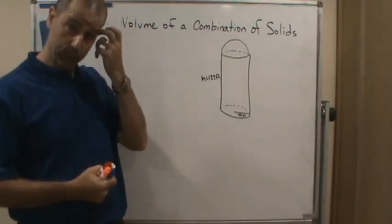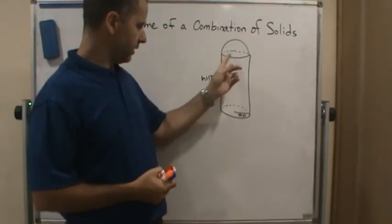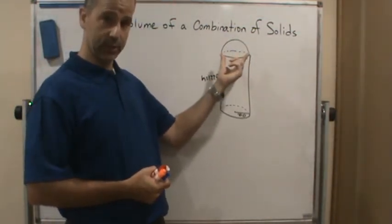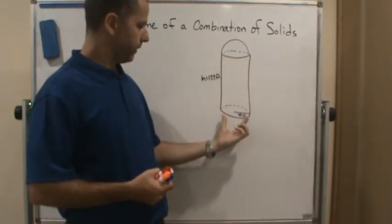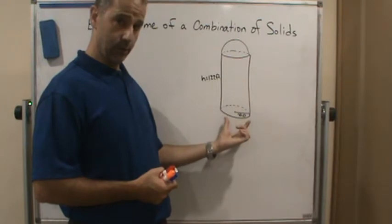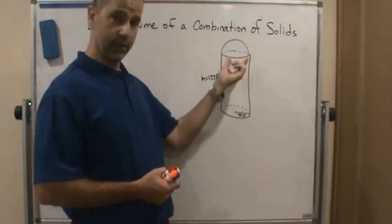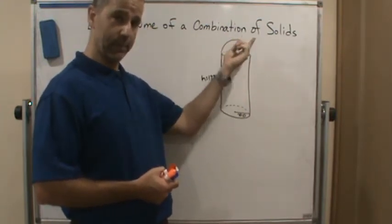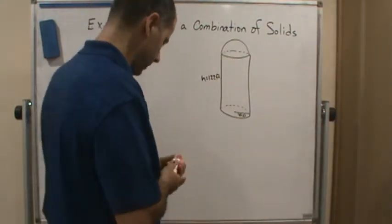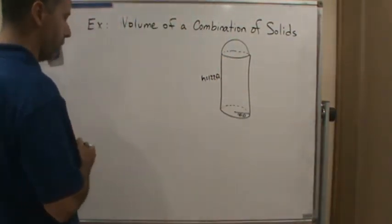So we need to find the volume. This is a cylinder with a hemisphere on the top of it, or a half a sphere. So we've got two things going on. We've got to find the volume of the cylinder part and then the volume of the sphere, the half sphere, the hemisphere, and then add those together. So let's build the formula for the volume.